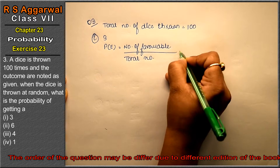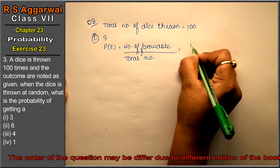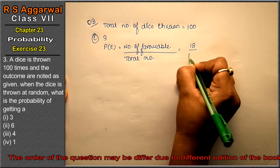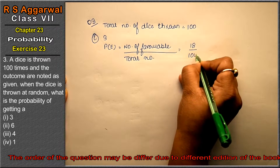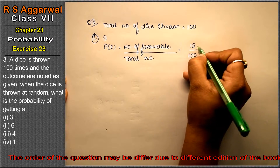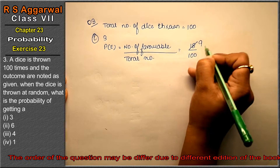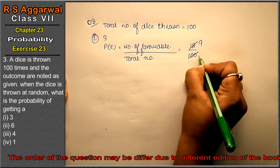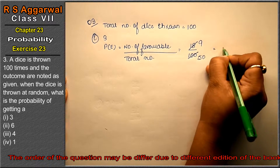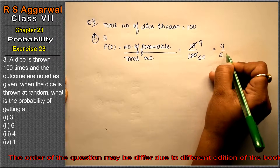The dice has gotten 3 a total of 18 times out of 100 throws. Now we can reduce this fraction: 18 over 100. Two nines are 18, two fives are 10, so that means 9 upon 50 is the answer.